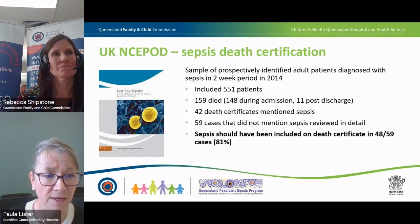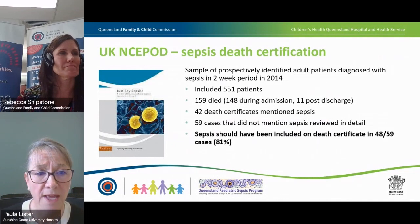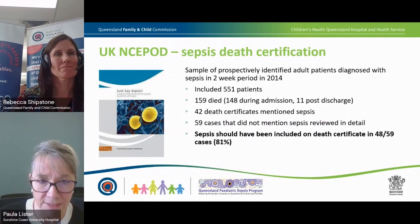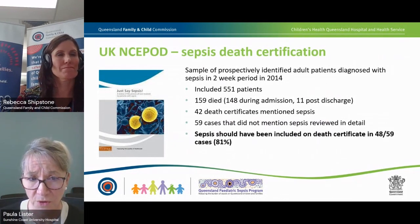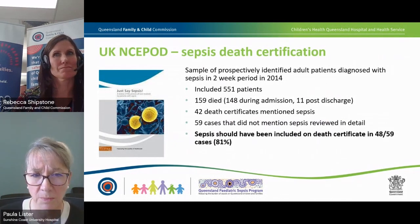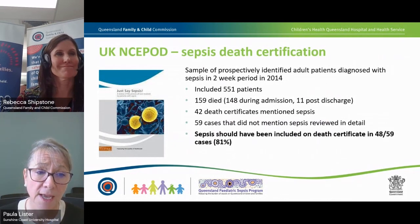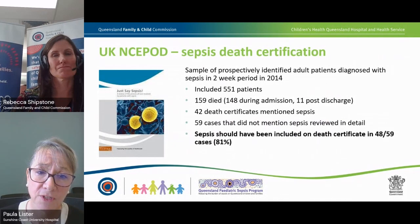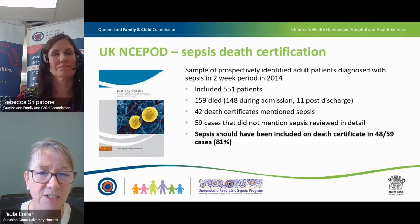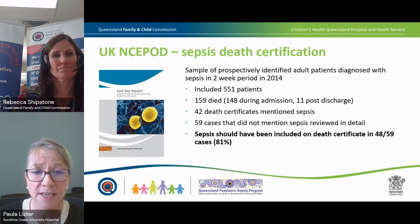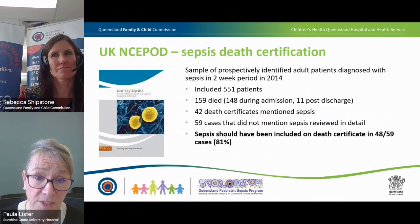This problem is not unique to Australia — it's worldwide. Data from the UK Confidential Inquiry into Sepsis in 2015 took a sample of prospectively identified adult patients diagnosed with sepsis. Of approximately 500 sampled, 159 died. Of the roughly 105 death certificates available, only 42 — about 25% — had sepsis mentioned. When reviewers examined those where sepsis was not mentioned, they found that approximately 81% would have had sepsis added by the reviewers. This confirms it is a global phenomenon: we are not coding and recording sepsis deaths properly.